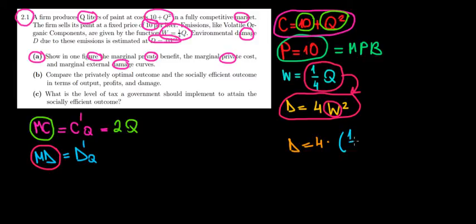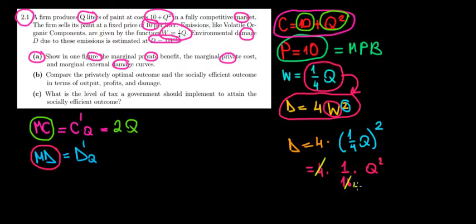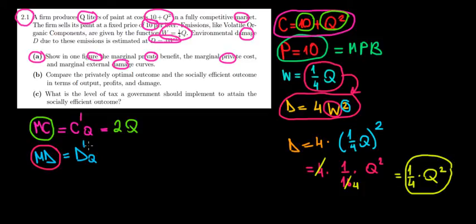Substituting, the damage equals 4 times W squared, where W equals (1/4)Q. So damage equals 4 times (1/4 Q) squared, which is 4 times (1/16) times Q squared. That gives us 4 over 16 times Q squared, which simplifies to (1/4)Q squared. Differentiating this damage function with respect to Q: keep the constant (1/4) and differentiate Q squared to get 2Q, giving (1/4) times 2Q.